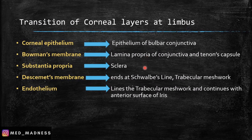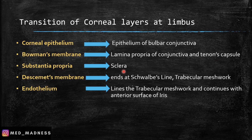Now, a small revision: The corneal epithelium is transformed to the epithelium of the bulbar conjunctiva at the limbus. Bowman's membrane continues as the lamina propria of the conjunctiva and also as Tenon's capsule. The substantia propria continues as the sclera. Descemet's membrane ends abruptly at Schwalbe's line and also continues posteriorly as the trabecular meshwork. The endothelium lines the trabecular meshwork and continues with the anterior surface of the iris.